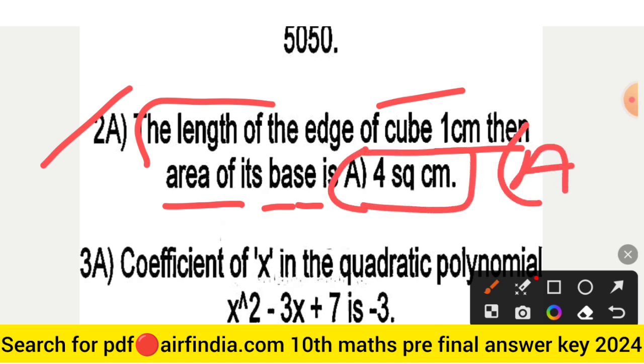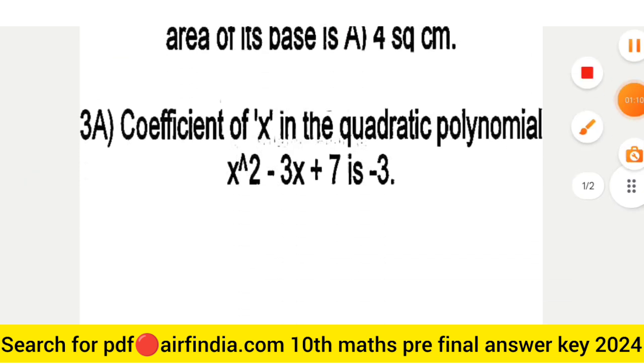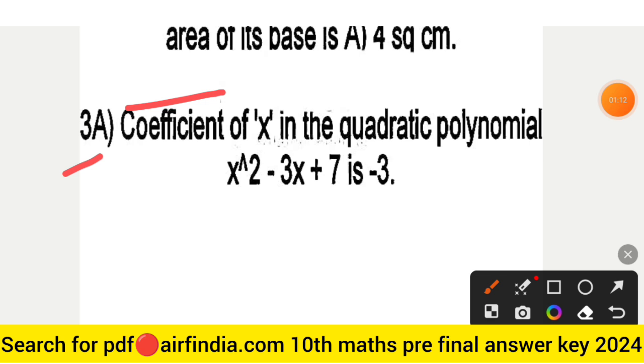Question number 3A: coefficient of x in the quadratic polynomial x² - 3x + 7, the coefficient of x is -3. This is your right answer.